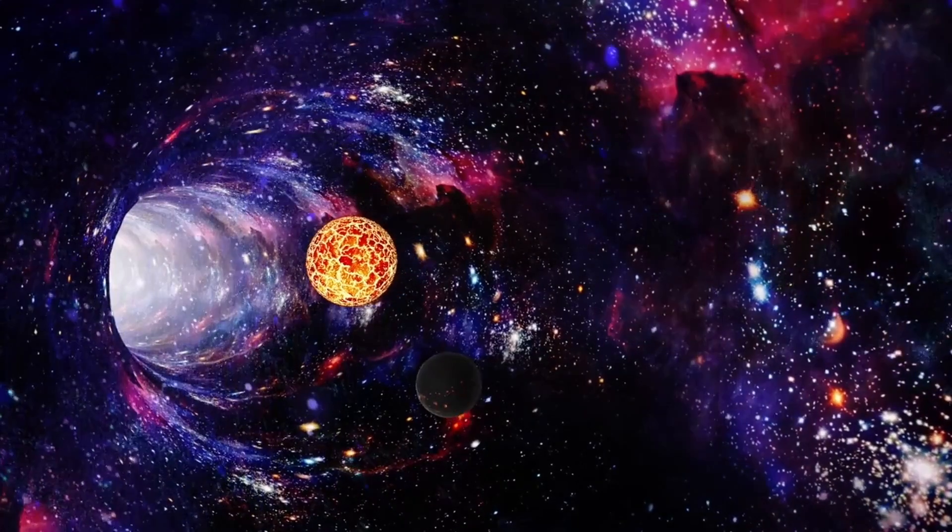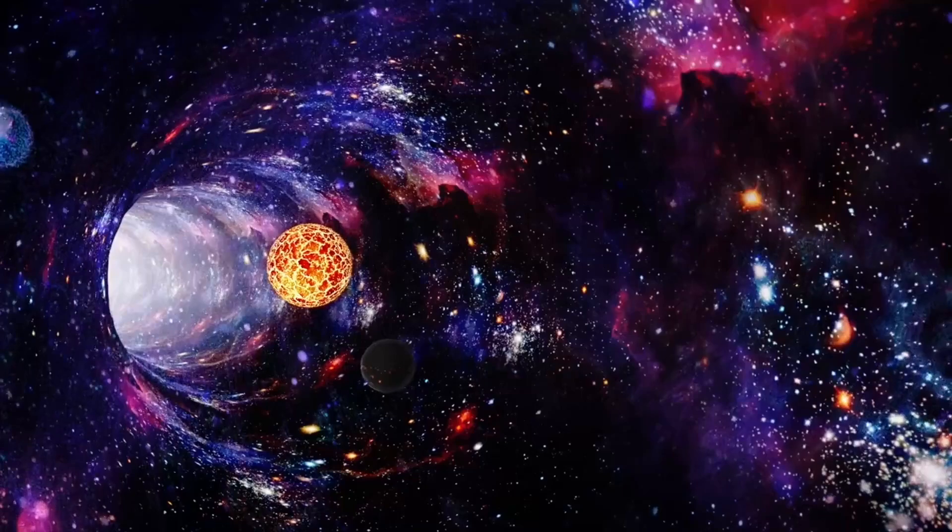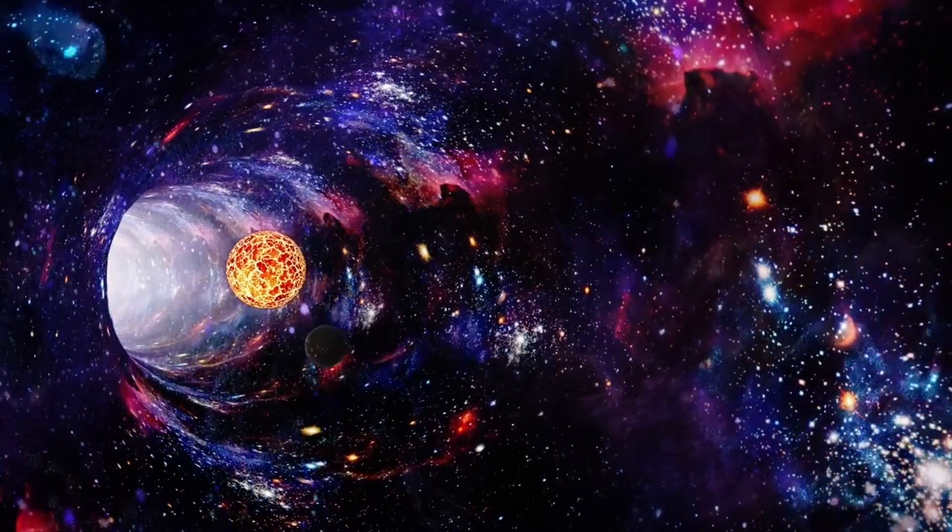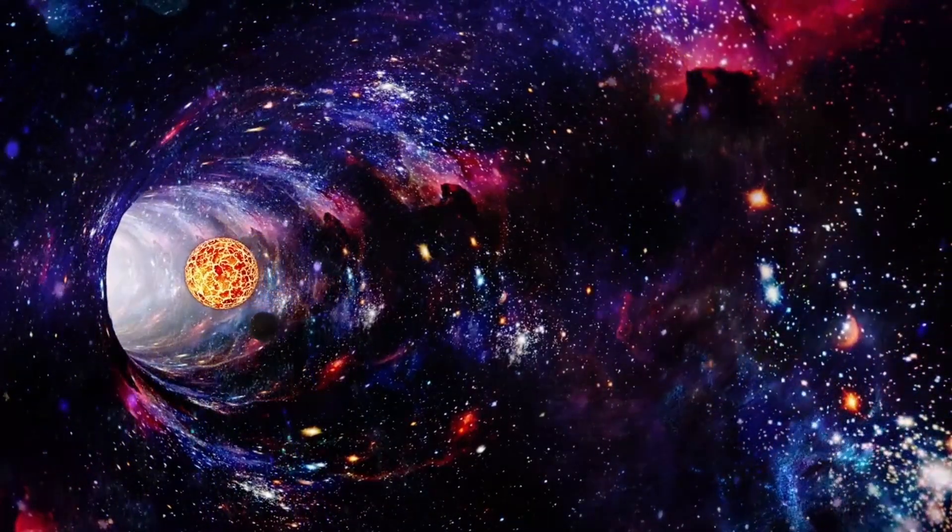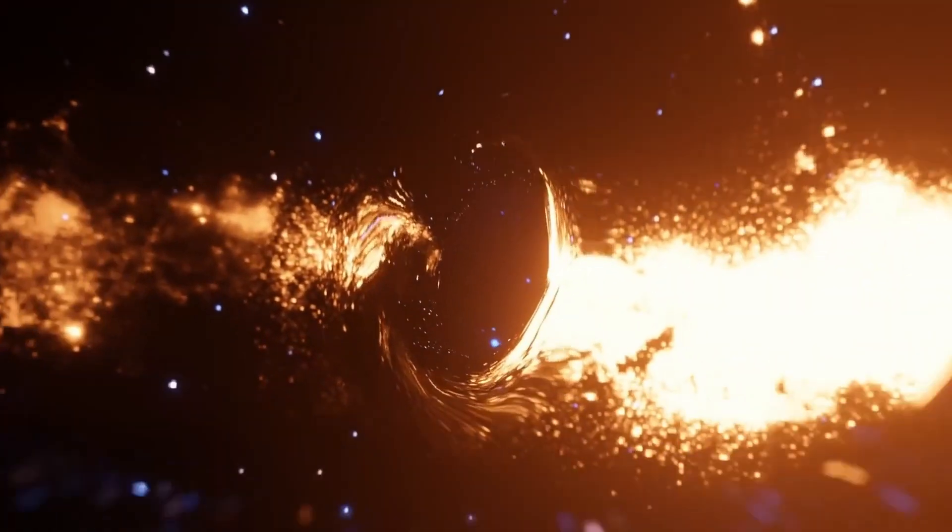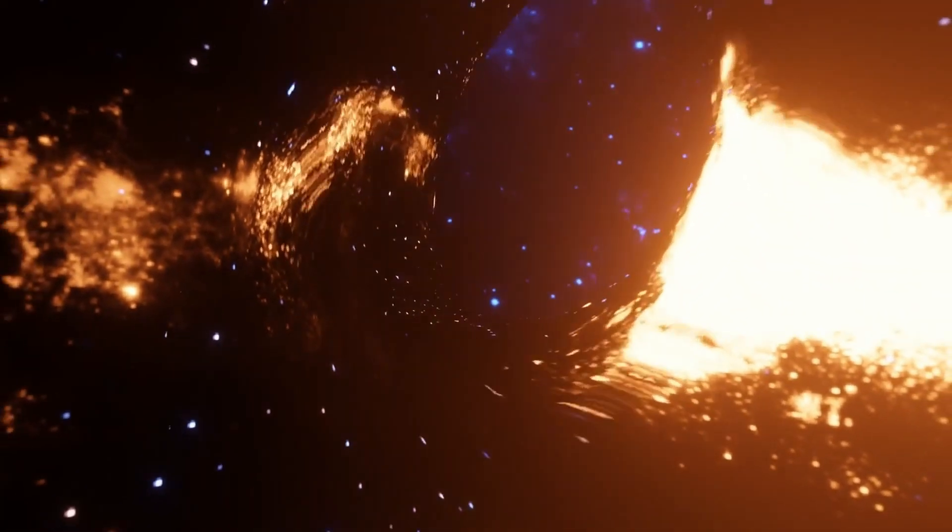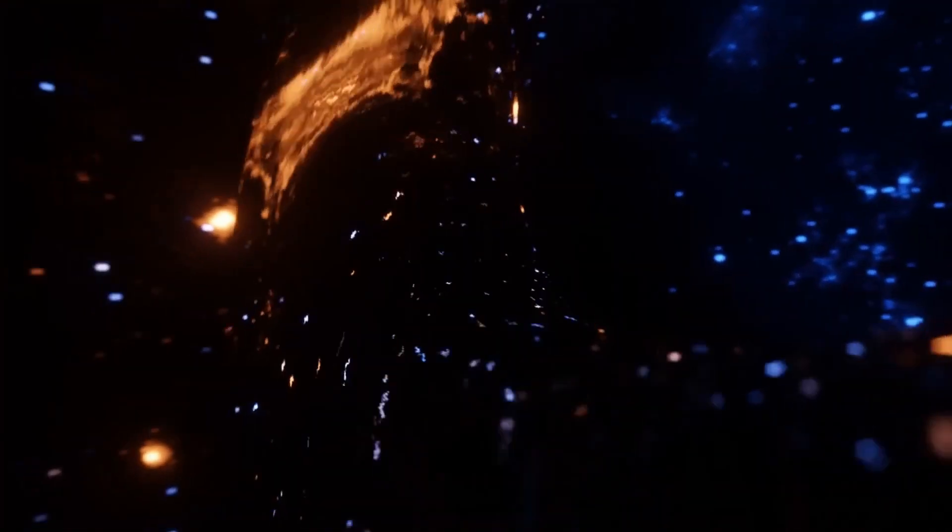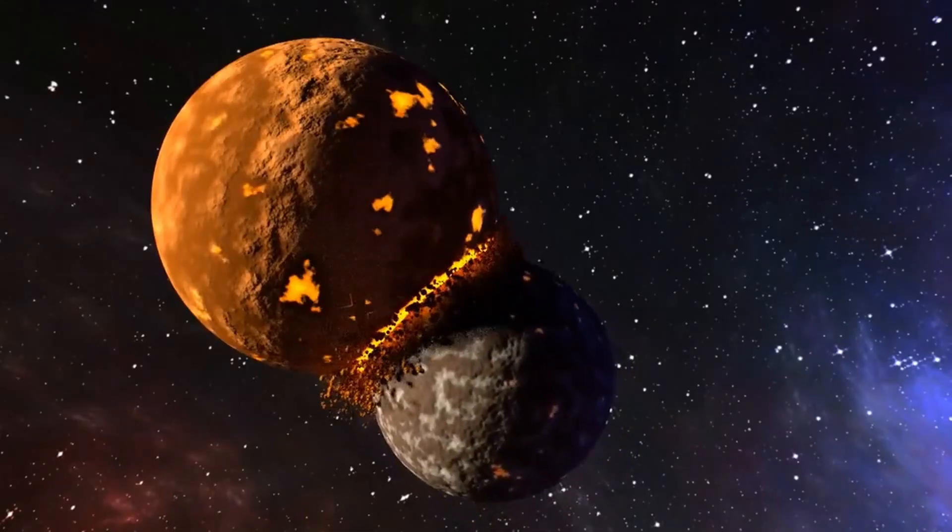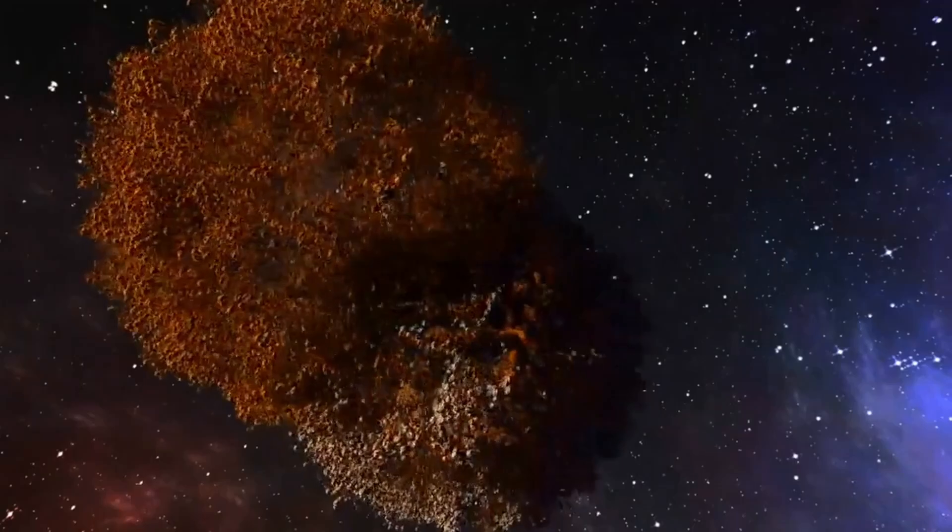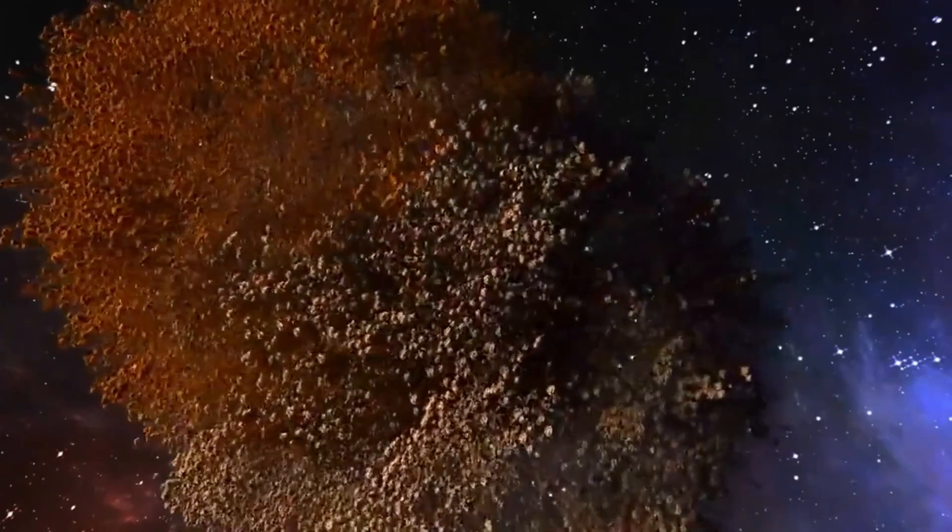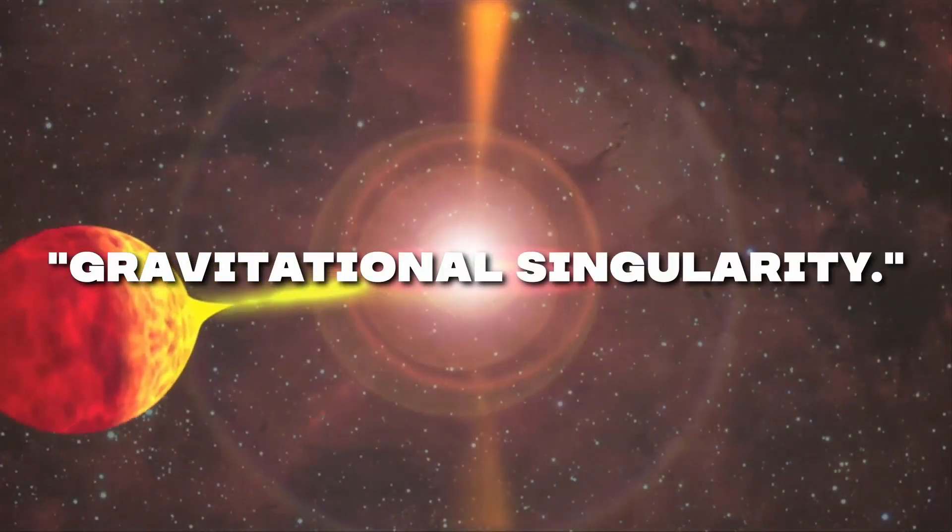Once an object passes the event horizon, it is lost forever. The object is pulled toward the singularity at the center of the black hole, where the gravitational pull is infinite. At the singularity, the laws of physics as we know them break down, and the object is crushed into an infinitely small point of infinite density. This point is called the gravitational singularity.